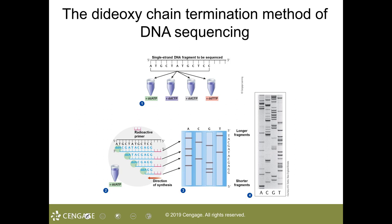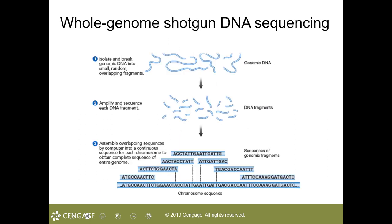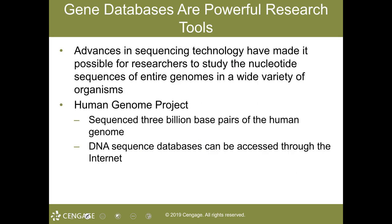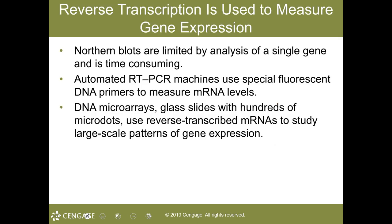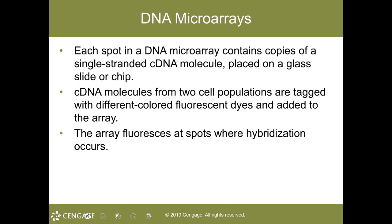Today, genomes of thousands of organisms of all three domains of life have been sequenced, and scientists rely on massive databases accessible to everyone, such as the International Nucleotide Sequence Database Collection and NCBI. Reverse transcription is used to measure gene expression, and DNA microarrays — glass slides with hundreds of microdots — use reverse-transcribed methods of mRNA to study large-scale patterns of gene expression. Geneticists also use powerful bioinformatics software and supercomputers to compare newly discovered sequences and analyze expression structures.